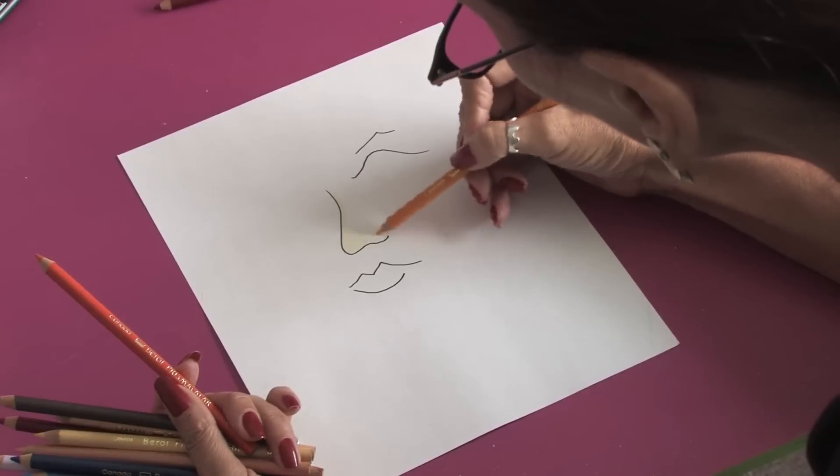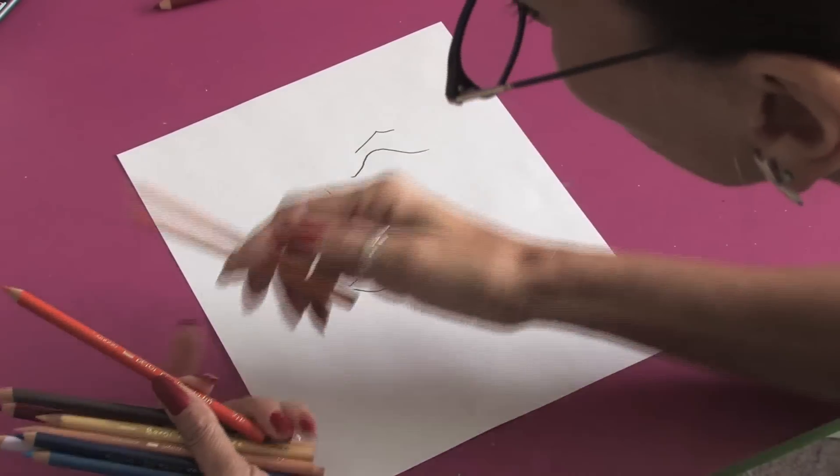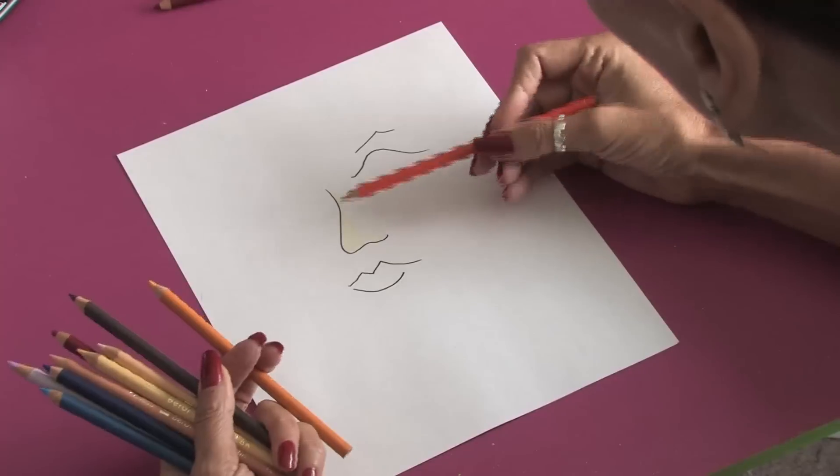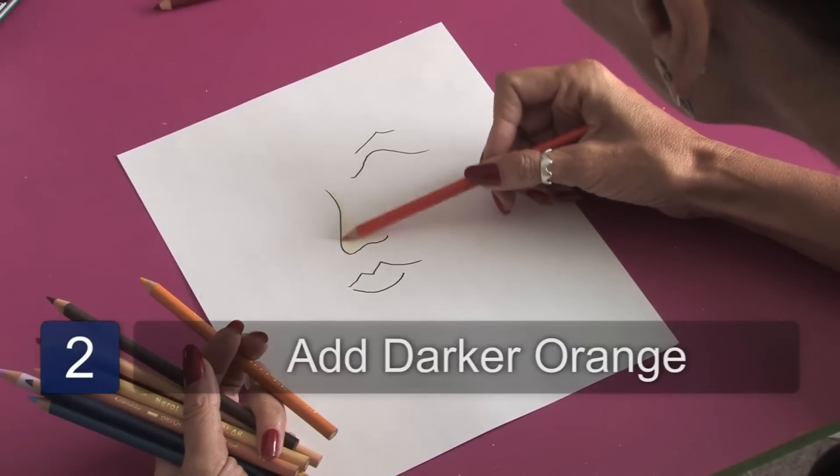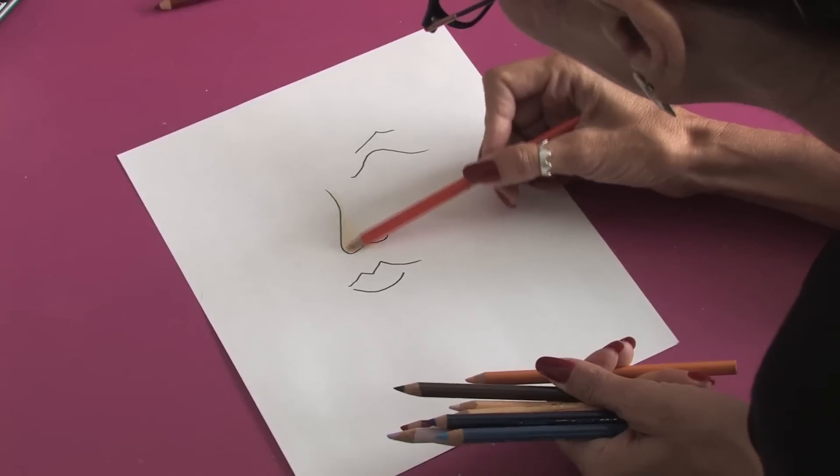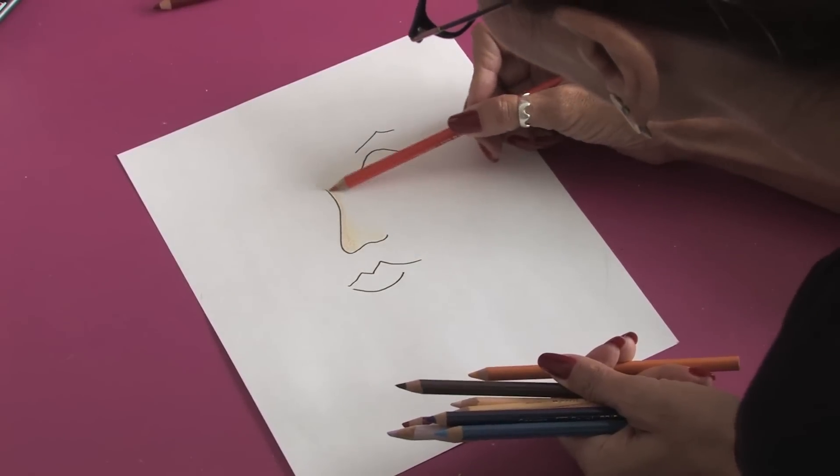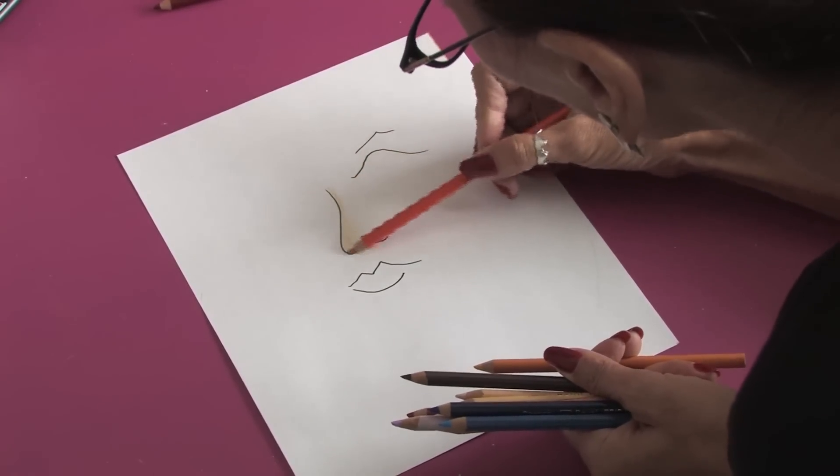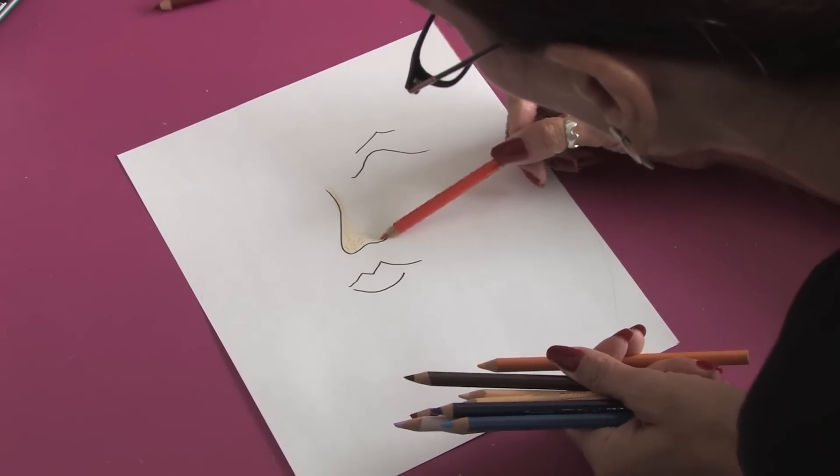If we want to make the skin tone a little bit darker, we can start adding a little bit of a darker orange over it and just start working it in. You want to keep your pressure on your pencil very light at this point and just work in the colors and start blending the colors.